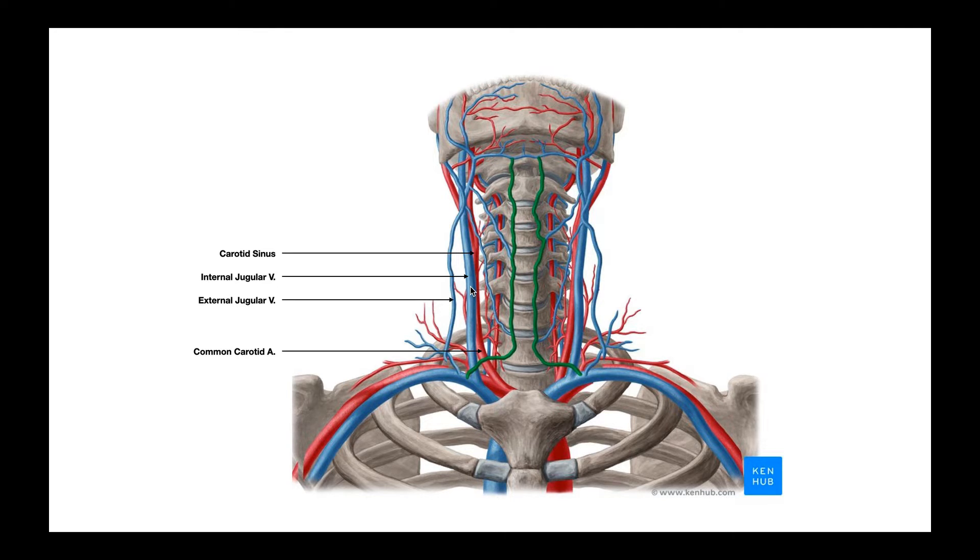Now, initially, you might only compress the jugular veins, particularly internal jugular vein. Just a little bit more force, you're going to start compressing the common carotid artery, especially if the choke hold is put a little bit lower on the neck.